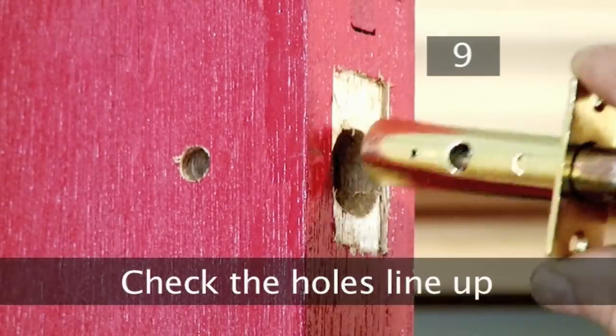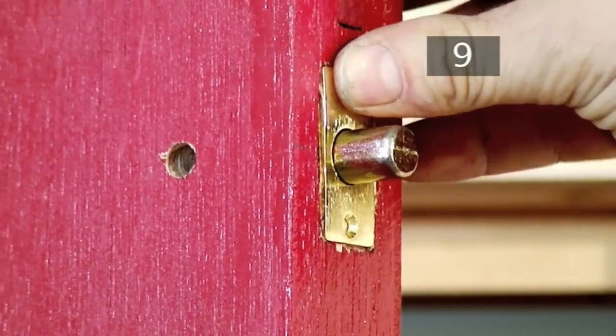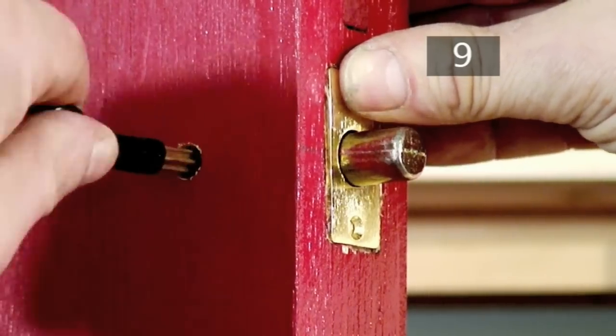Step 9. Check the holes line up. Place the bolt in its recess. Put the key in the new hole and turn it. You should be able to extend and retract the bolt.